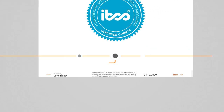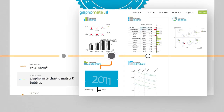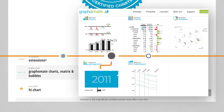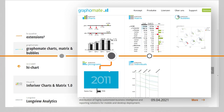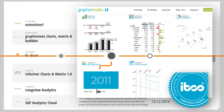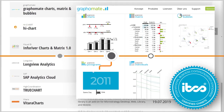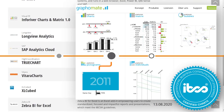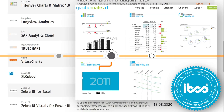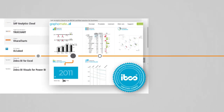Graphomate was the first certified software tool for charts and tables in 2011. Today we have certified 11 software tools so far.